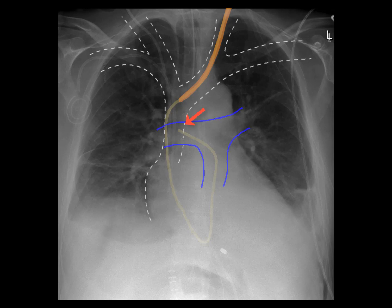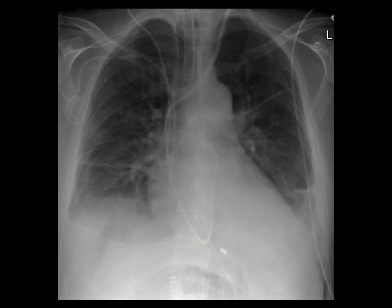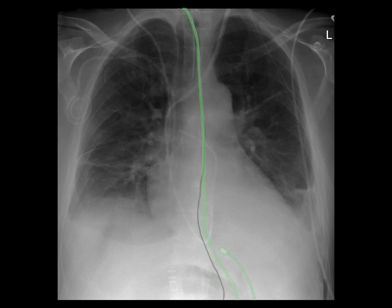The tip of the Swan-Ganz catheter is in the right main pulmonary artery. This patient also has two enteric tubes, one of which is more typically seen as a feeding tube, and this one is looped back upon itself in the stomach, normally with its tip in the jejunum. The other tube we can barely make out is the skinny radiopaque stripe within it, extending into the stomach and off the inferior margin of the film.